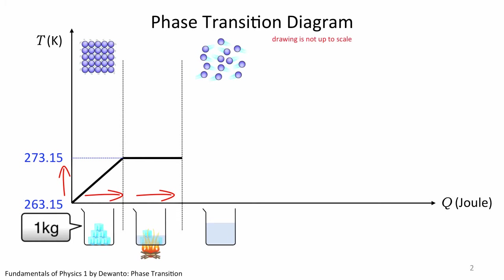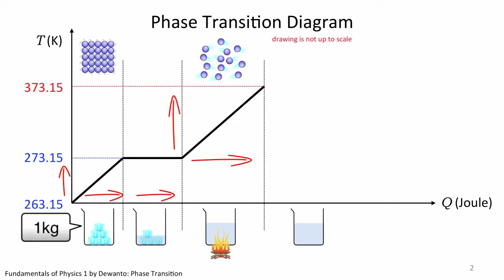Now we heat the water some more. Temperature increases further for obvious reason, until it reaches the boiling point of 373 Kelvin or 100 degree Celsius. So at this stage, we have 1 kg of water at 100 degree Celsius.